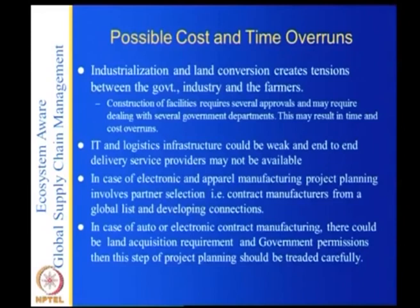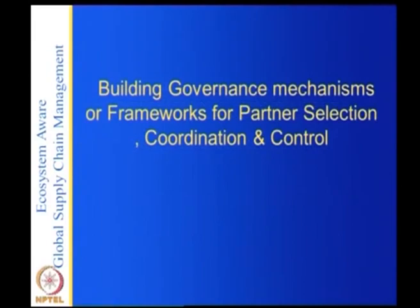In the case of electronics and apparel manufacturing, project planning involves partner selection from a global list of contract manufacturers and developing connections. In the case of auto, there could be land acquisition requirements and government permissions, and this step of project planning should be treated carefully. At the end of the first stage of supply chain formation, you have all the information you need. Now you have to build governance mechanisms or frameworks for partner selection, coordination, and governance. This is a generalized design — a methodology or framework, not specific to one company.